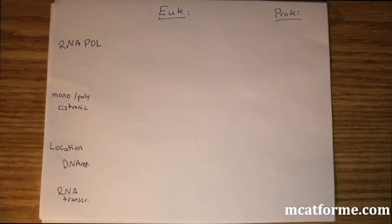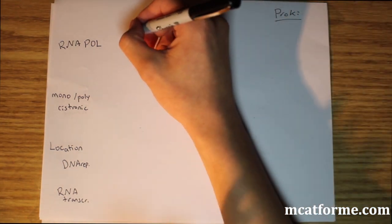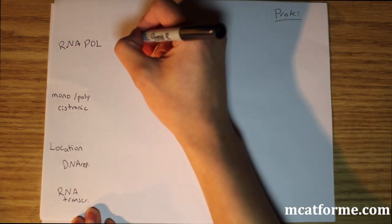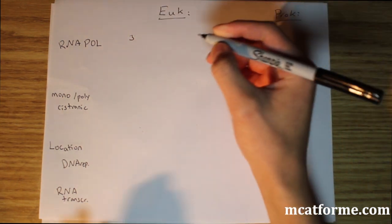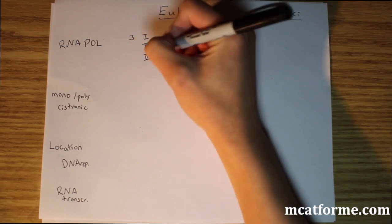Now for RNA polymerase. The reverse is true here. Before we had prokaryotes with three DNA polymerases. Now we have eukaryotes with three RNA polymerases—the first, second, and third. We'll go over all of those.